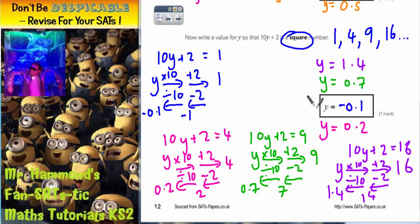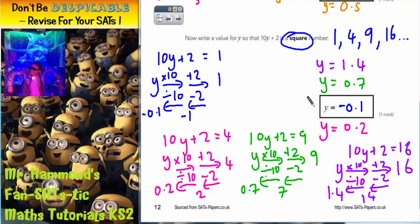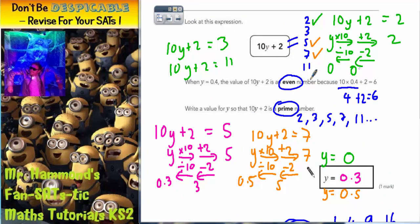Any of those answers will be acceptable. But the method stays the same. You make the expression equal to a square number. And then you solve the expression to find the mystery value. On the top question, you make the expression equal to a prime number, which was these numbers here. And then you solve the question to find the mystery number. So there's your answer.